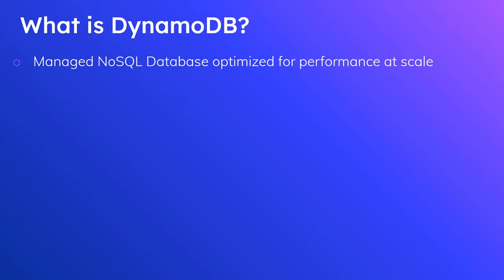Dynamo is a key-value lookup store. Most of the APIs you're going to be working with, you'll be providing the primary key so that you can find the corresponding value. It distributes your data across different partitions, and partitions can be different machines, either physical or virtual. So you get extra levels of redundancy there. Now, the fact that it's a managed database — what does that mean?